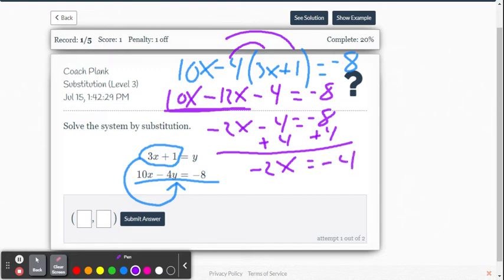And now we don't want negative 2x, we want positive 1x. So we're going to divide by negative 2, both sides, division property of equality. So I get positive 1x equals, well, negative 4 divided by negative 2 is positive 2. So we know x equals 2.